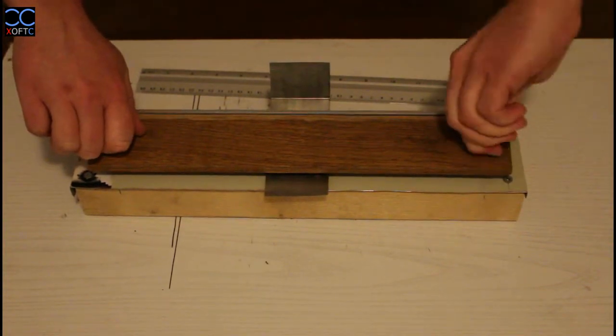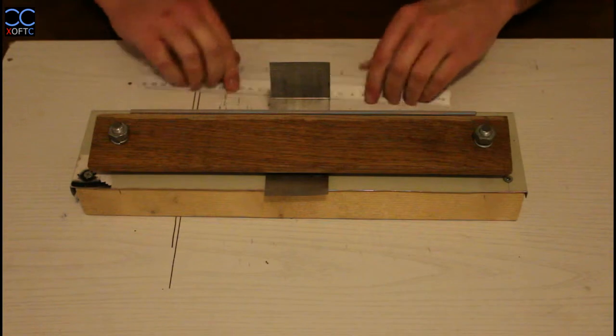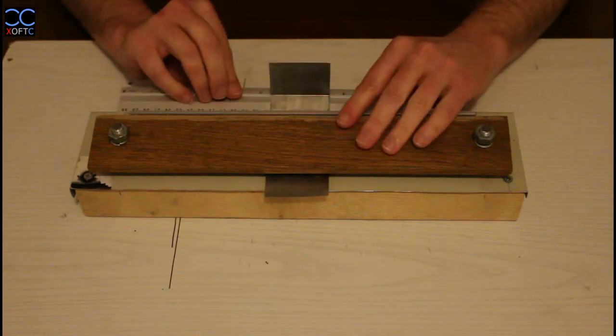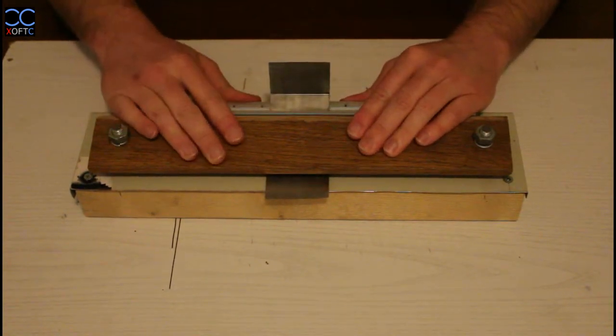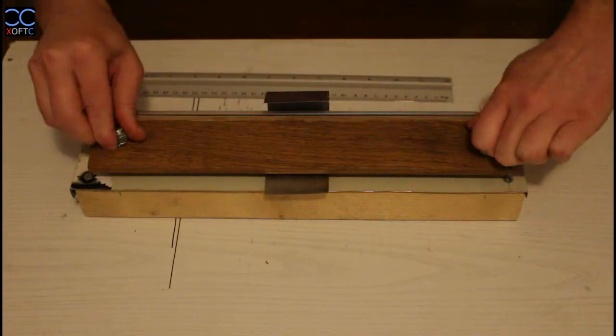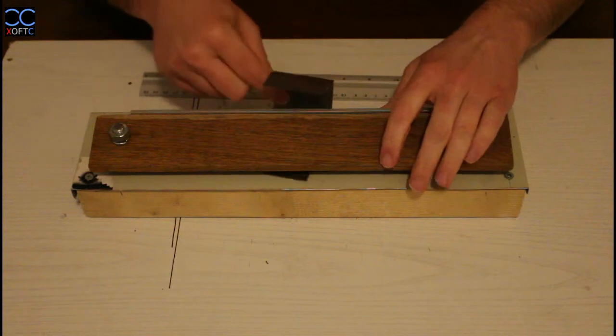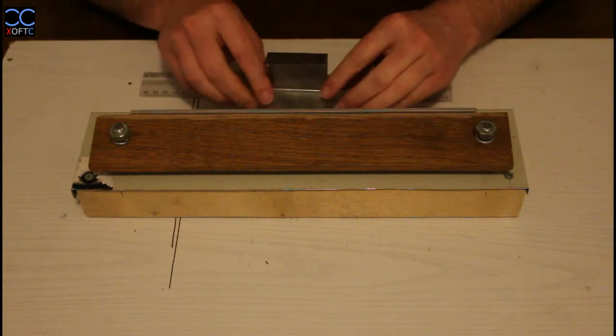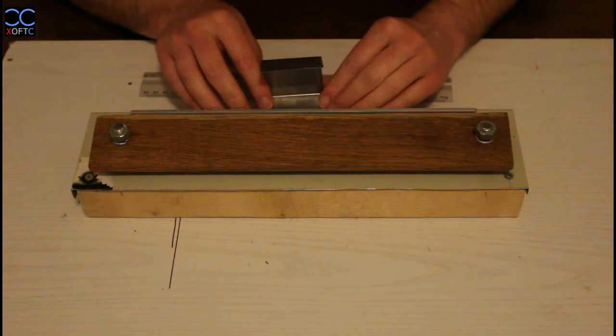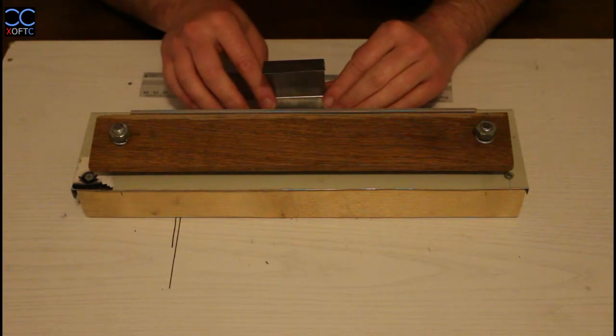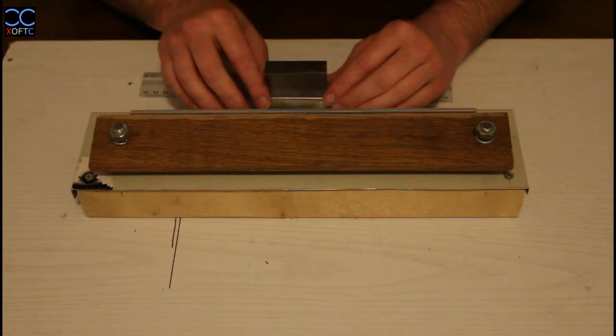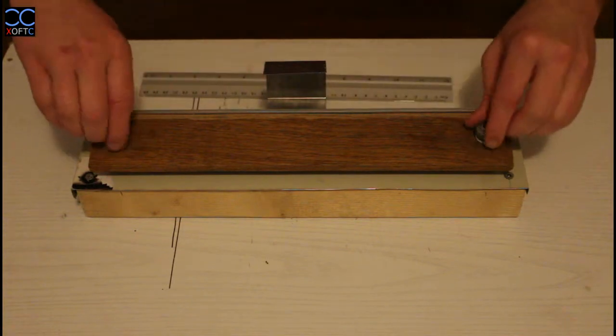Once again, pull your sheet forward, put it on the second mark. Close it tight, close it tight and then you make it. Last one, again we're going to have the same issue where we cannot fold it all the way to the end, but that is okay.